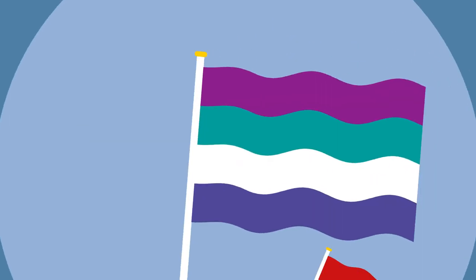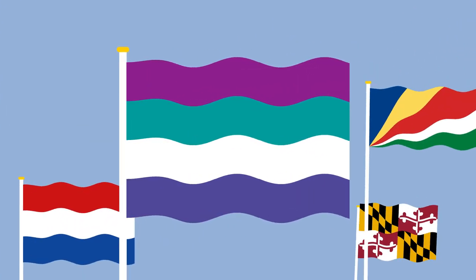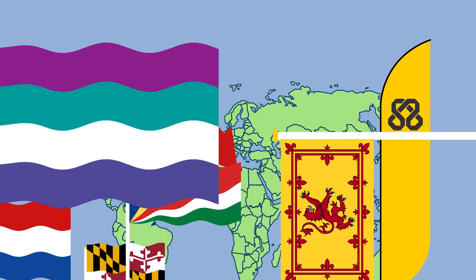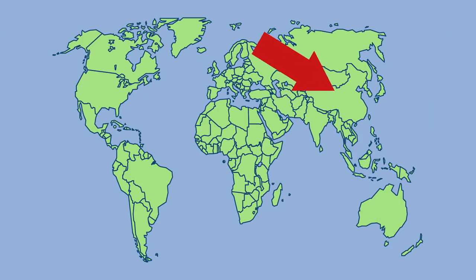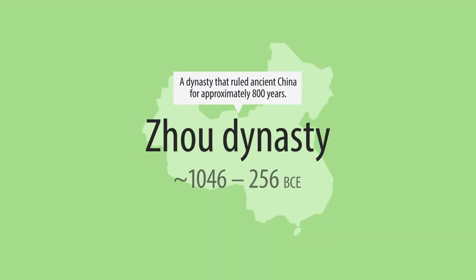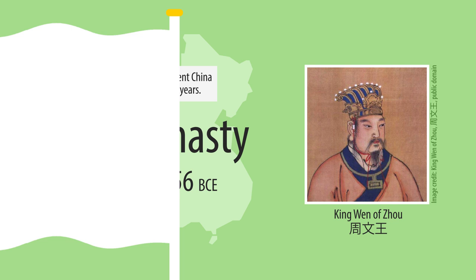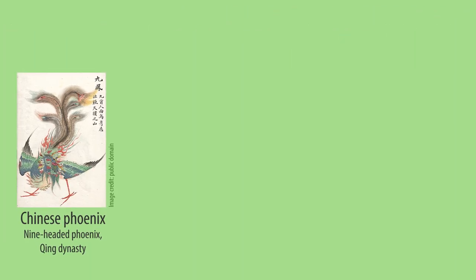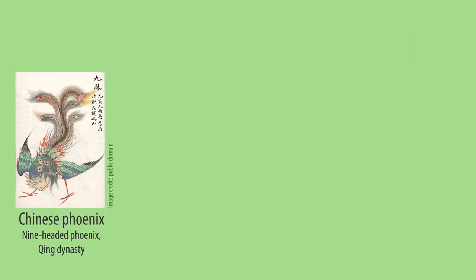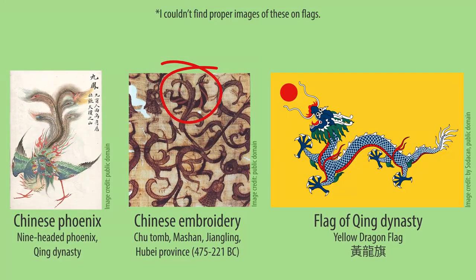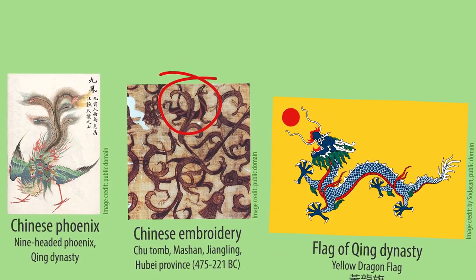Flags recognized as such, and not as banners, probably originated in Asia, either India or China. It is mentioned that the founder of the Zhu dynasty had a white flag carried before him. Chinese flags were adorned with a bird, tiger, or dragon. As with a military standard, the fall of a flag meant defeat.